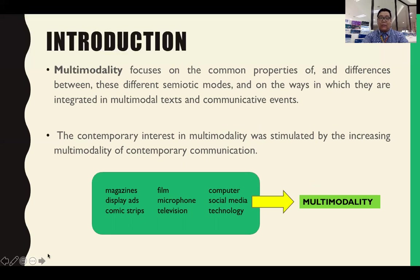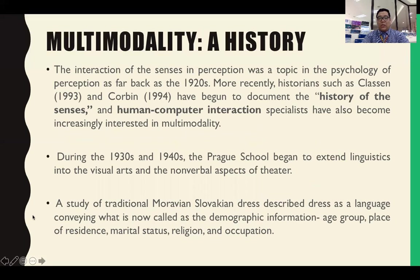It has been a trend in linguistic research because when you unravel the meaning of multimodal discourse, there is more to what you actually see in the multimodal discourse itself. You can also unravel meanings or semantics by considering all of the elements present in the multimodal text. The interaction of the senses in perception was a topic in the psychology of perception as far back as the 1920s. More recently, historians such as Klassen in 1993 and Corbyn in 1994 have begun to document the history of the senses, and human-computer interaction specialists have also become increasingly interested in multimodality.